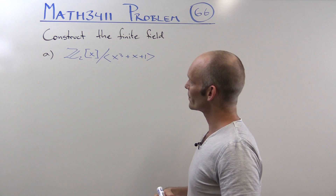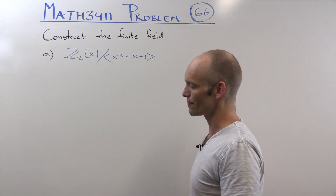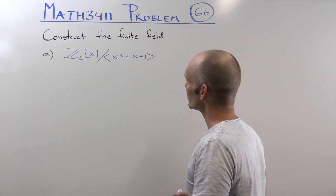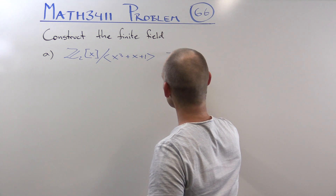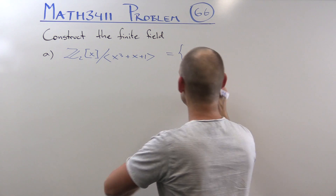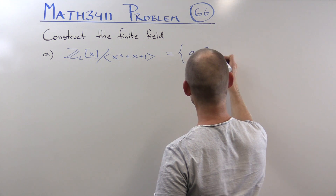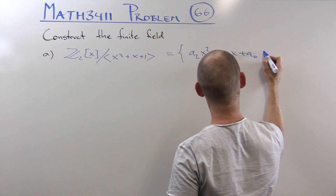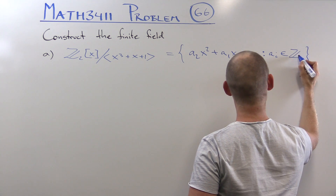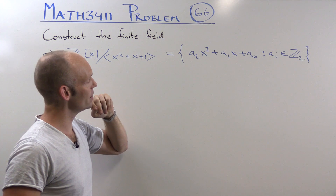So we know that this is a finite field, and we have to construct it. What does construct mean in this case? It's a bit ambiguous, but one approach is to write up this field as a set of linear combinations — that's the vector space way of looking at this finite field. That would be the polynomials of degree at most 2: a₂x² + a₁x + a₀, where all coefficients are binary.